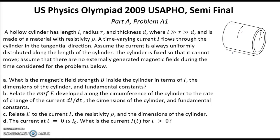Now part A, problem A1. A hollow cylinder has a length L, radius R and thickness D, where L is much greater than R, which is much greater than D, and is made of a material with a resistivity rho. A time-varying current I flows through the cylinder in the tangential direction as shown in the picture. Assume the current is always uniformly distributed along the length of the cylinder. The cylinder is affixed so that it cannot move. Assume that there are no externally generated magnetic fields during the time considered for the problems below.